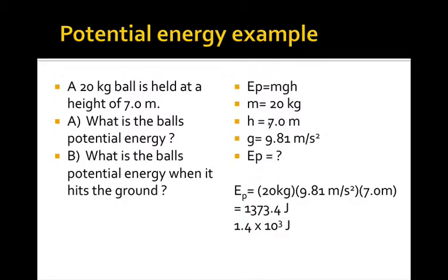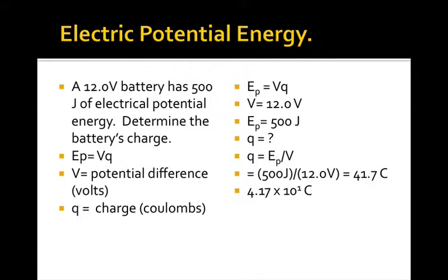Now again, we have to take a look at our original data and find the smallest number of significant digits. This has 2 and this has 2. Therefore, 2 is our smallest number of significant digits. And therefore, we express our answer with two significant digits. 1.4, we round 3 up to 4, times 10 to the 3 joules. Now what would the ball's potential energy be when it hits the ground? Well, we could use the same equation, but just put in 0 instead of 7, and you'd see it has no potential energy.